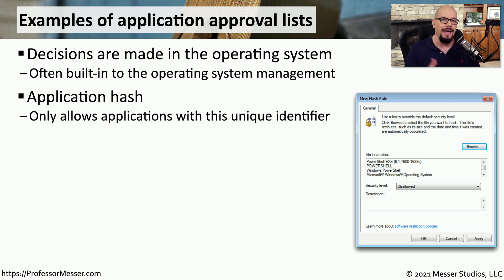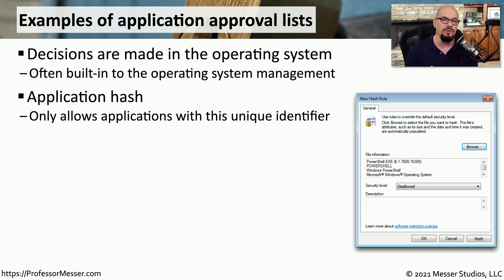For example, there may be a hash that is taken of an executable, and if that hash matches the executable on the system, it can either be allowed or denied access to execute. Since this is a hash, if the application changes, then the hash would change. So this may be something that the security team has to constantly update every time a new version of software is introduced.